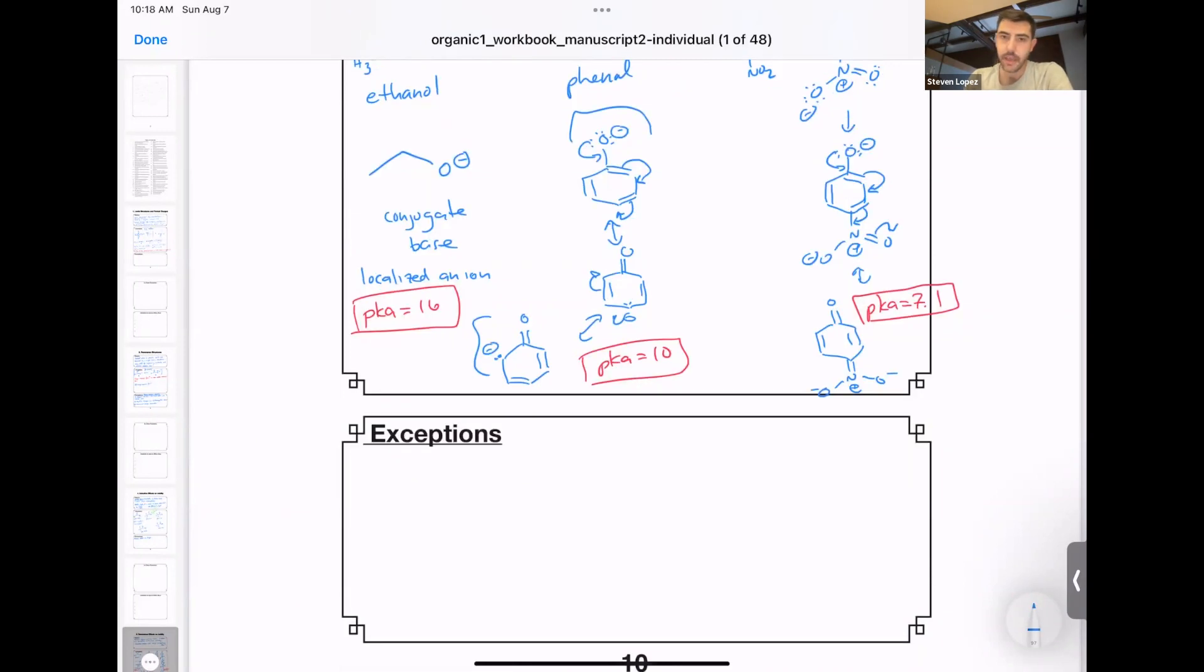You have a substituent on a phenol ring like a methoxy group. So if we consider the acidity of a molecule like this one, paramethoxyphenol or 4-methoxyphenol, we can think about its conjugate base. There's some competing effects, which is what I would think of as an exception here.